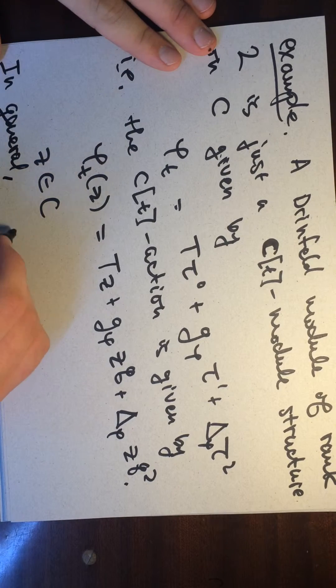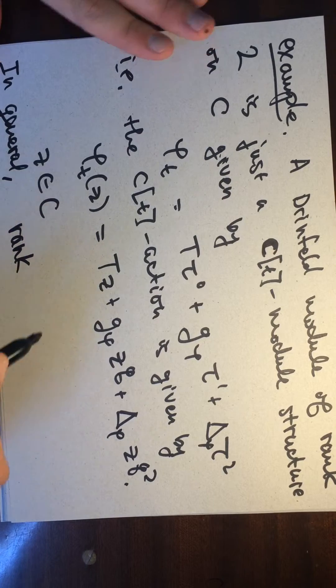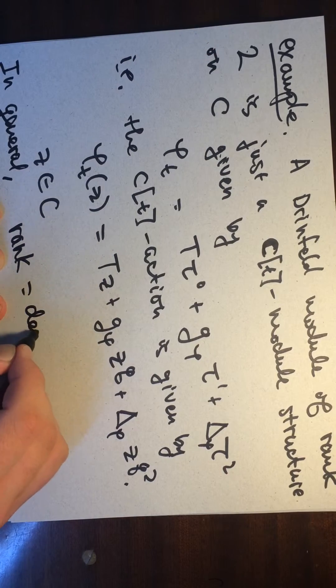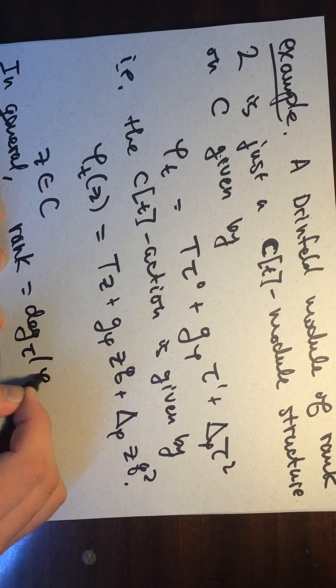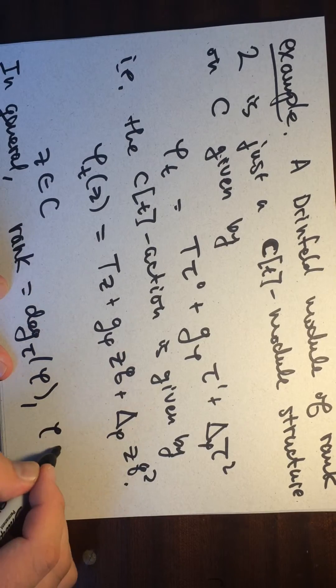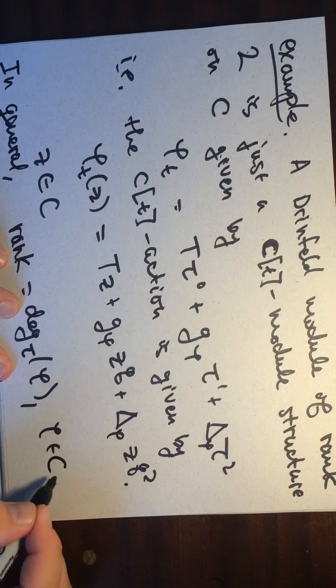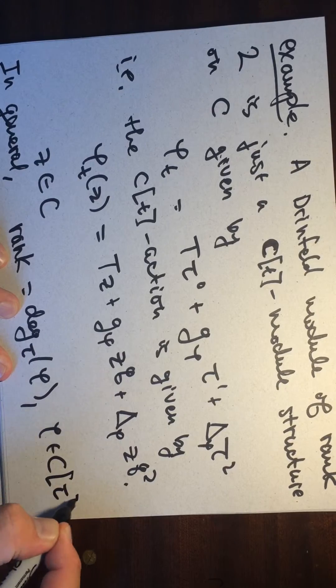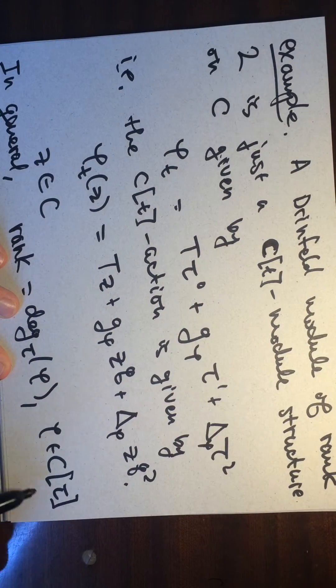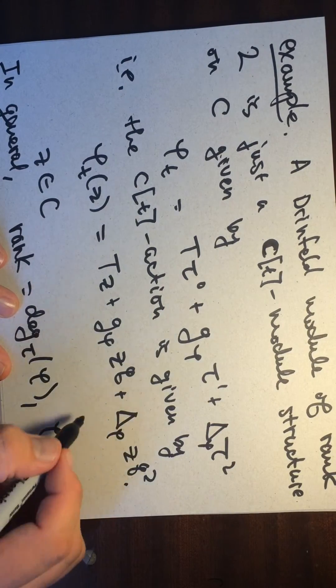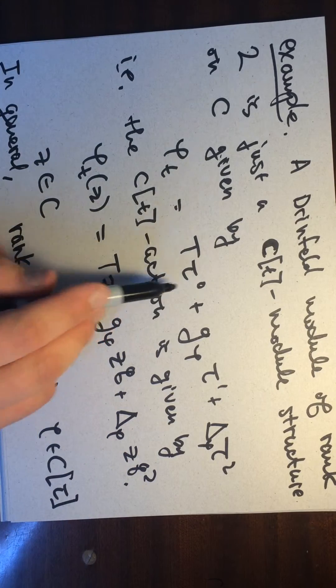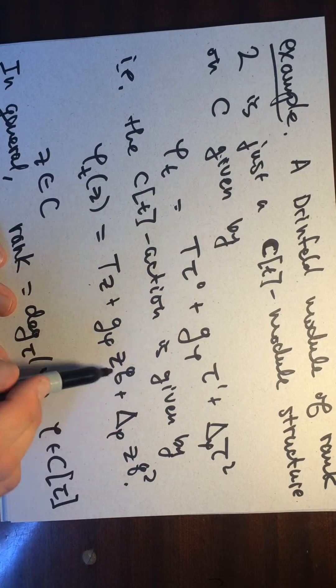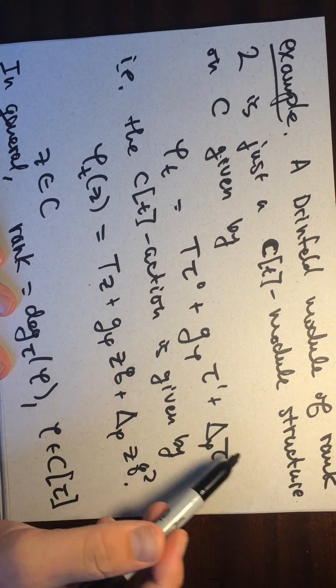So this is a rank two. If we went higher degree, so in general the rank is equal to the degree with respect to tau of phi, for phi an element of, well, the endomorphism C[tau], okay not [T] tau, okay. So tau is again this Frobenius thing, so this is the identity, this is Q, so you raise to the Q power and then this is Q squared.